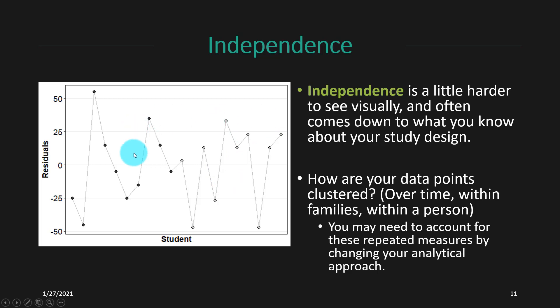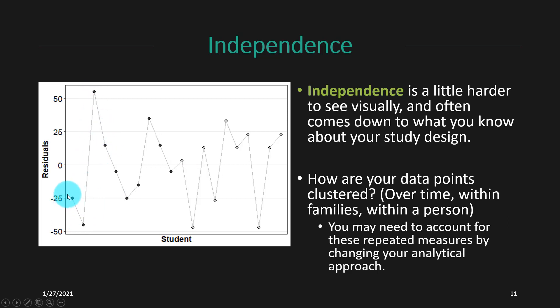With independence, that's a little harder to see visually, but we know that people were randomly assigned to these different groups based on the experimental design. We have black dots for those who took the course and gray dots for those who didn't. If we don't see a reliable pattern in the distribution of the residuals, we feel pretty good about independence being achieved — but it really comes down to what we know about the study design. For example, if two dots with negative residuals were actually two assessments from the same person, that person generally tends to be more negative than average, which would violate independence. Since each data point comes from a single person randomly assigned to different treatment groups, these data are relatively independent.